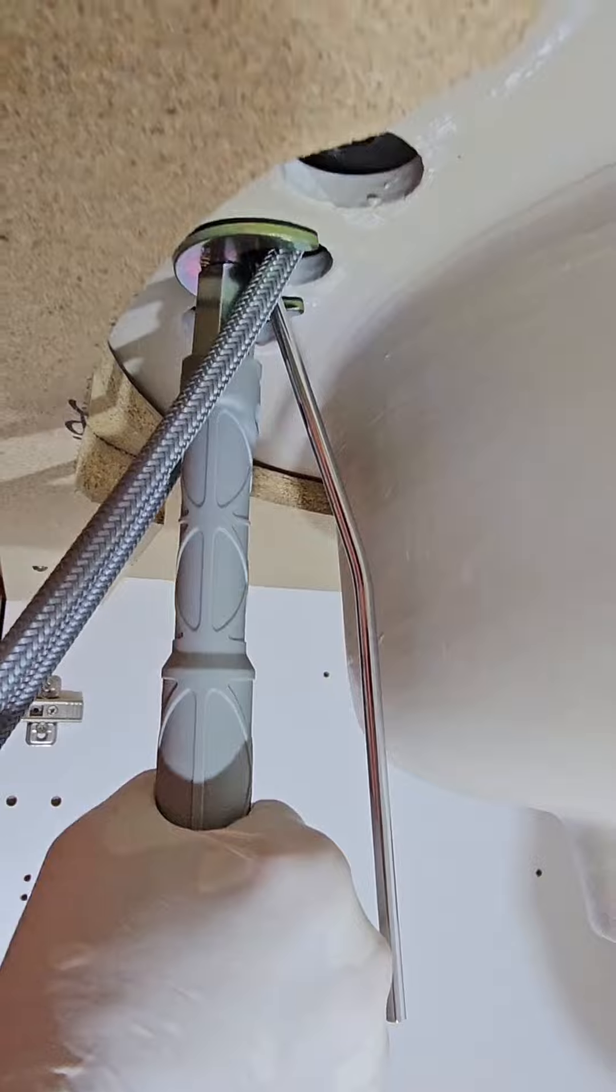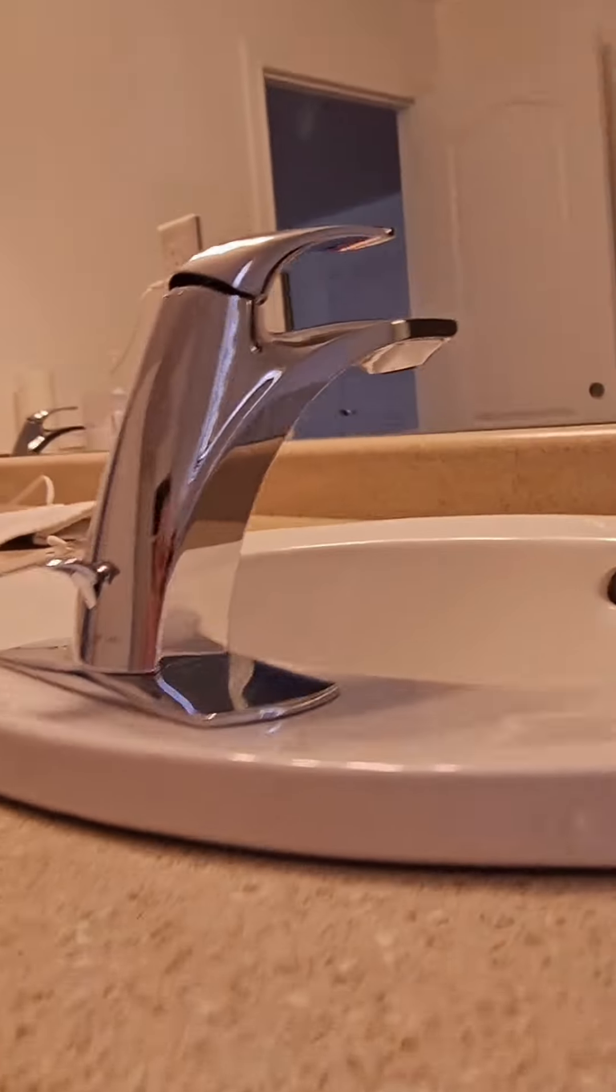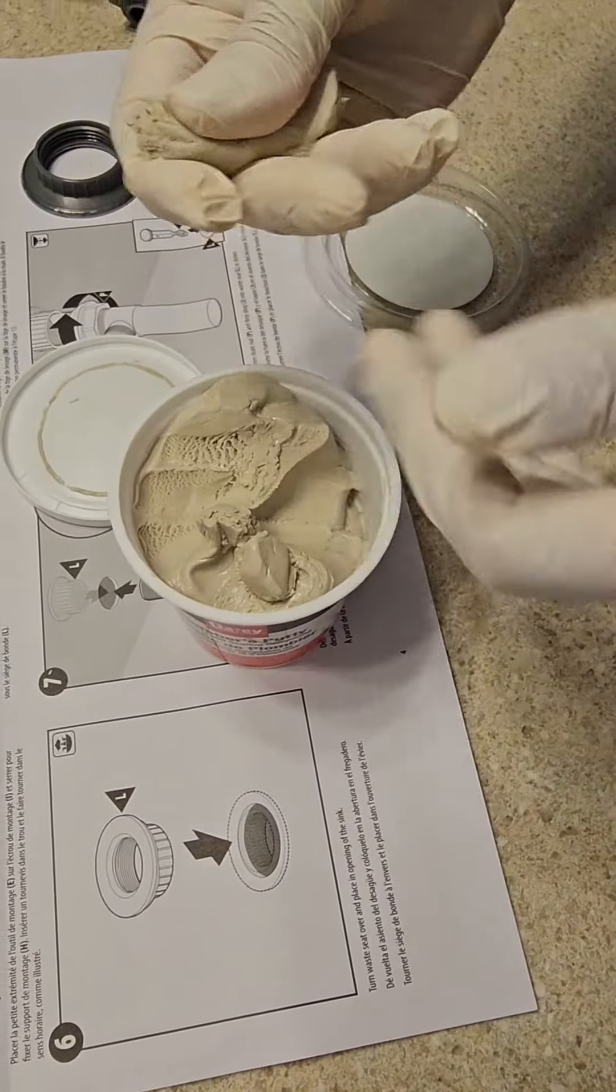Next, we are going to install the drain stopper. Don't take the film off the flange until everything is done. That protects the flange from scratches and damage.